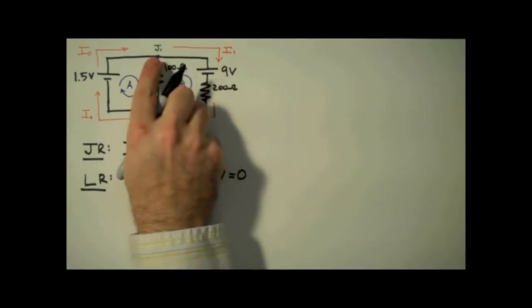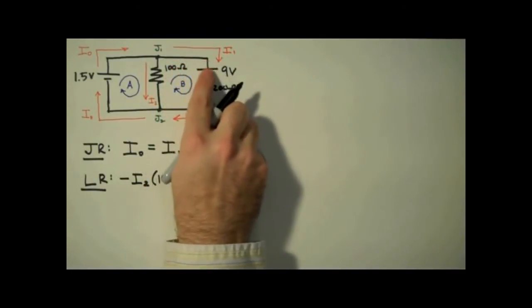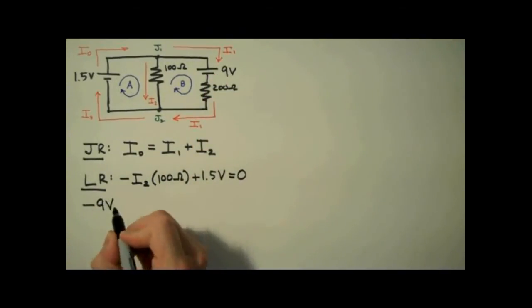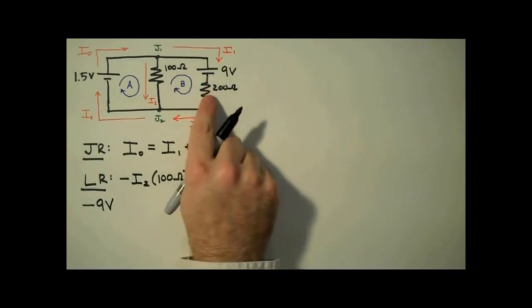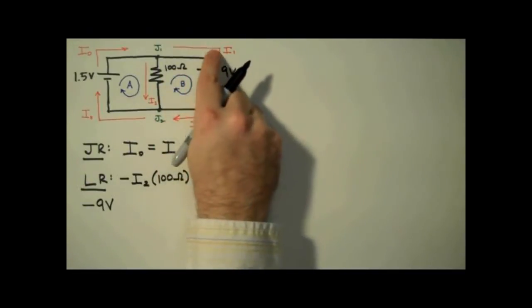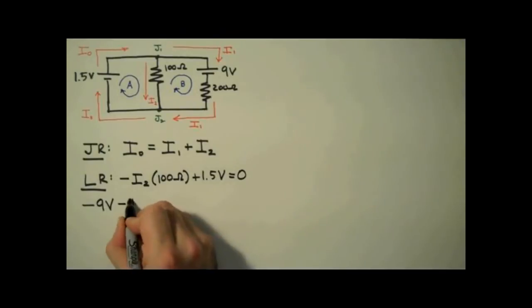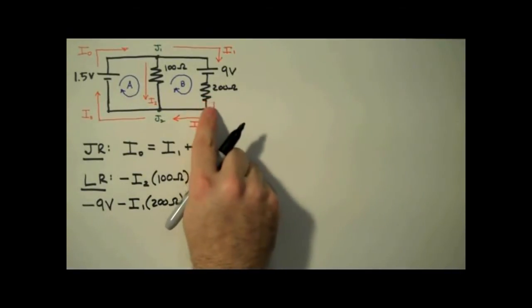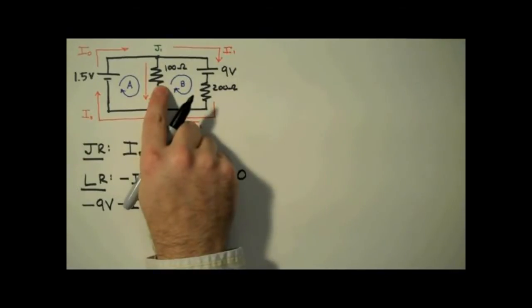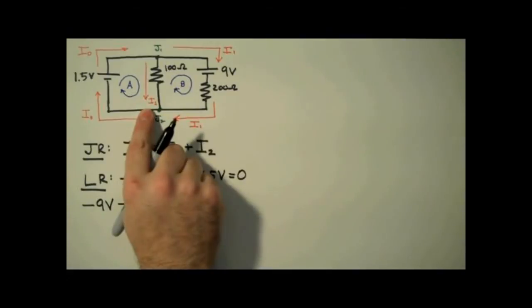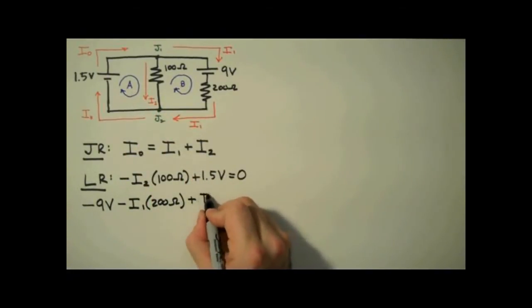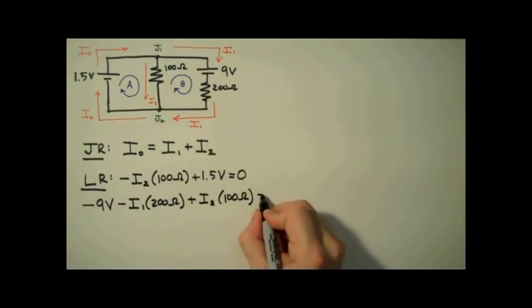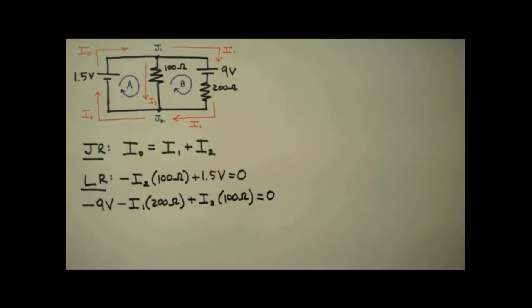Next we use the loop rule to analyze loop B. Starting in the upper left-hand corner, traveling clockwise, the first component is the 9 volt battery — traveling from high to low, that means a voltage drop, minus 9 volts. Continuing around loop B, we get to the 200 ohm resistor; we're traveling clockwise, which is with the direction of I1, indicating a voltage drop — minus I1 times 200 ohms. Then we continue up the middle leg to the 100 ohm resistor, traveling against the direction of I2 — a voltage lift, plus I2 times 100 ohms. We set this equal to zero. At this point, the physics of determining the current in this problem is done.